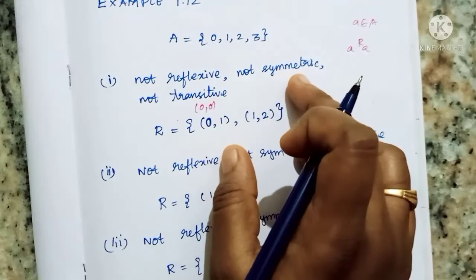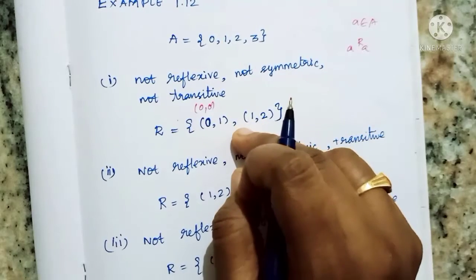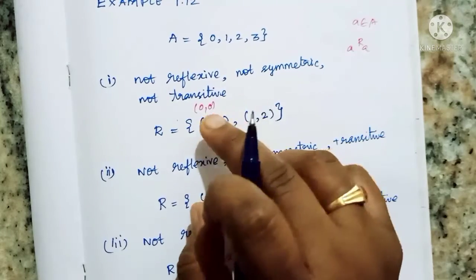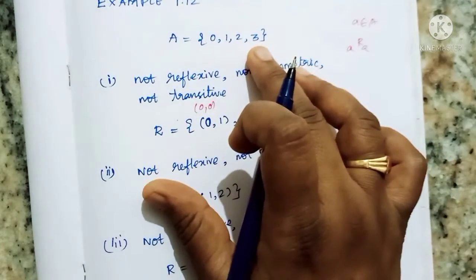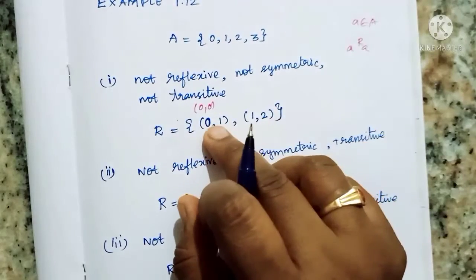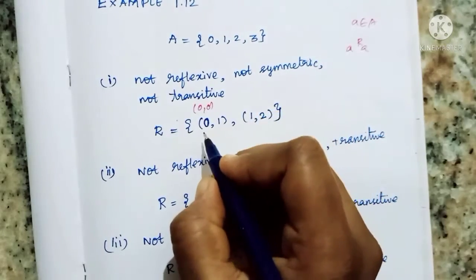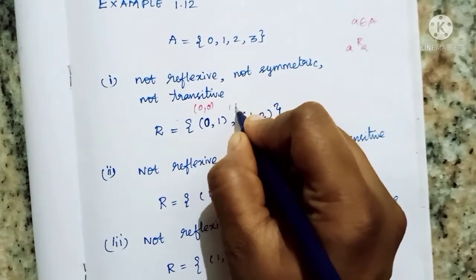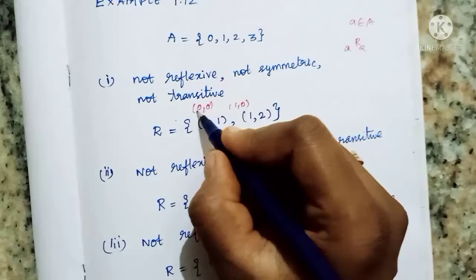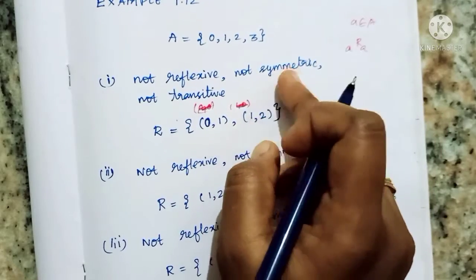Then not symmetric: symmetric means if (1,2) is in the relation then (2,1) must also be in the relation. We have (2,3) in the relation but (3,2) would also be needed. We have (0,1) and (1,2). If (0,1) and (1,2) are present, it is not symmetric. We can say it is not reflexive or symmetric.